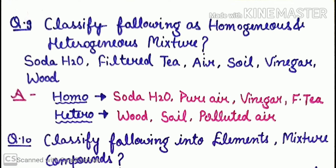Question number 9: classify the following as homogeneous or heterogeneous mixtures — soda water, filtered tea, air, soil, vinegar, and wood. Homogeneous mixtures include soda water, filtered tea, air, and vinegar. Heterogeneous mixtures include wood, soil, and polluted air.